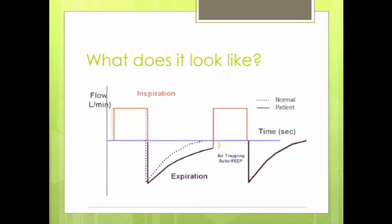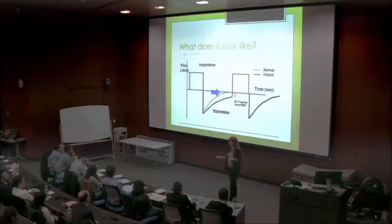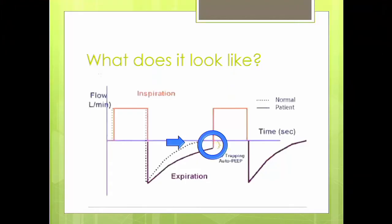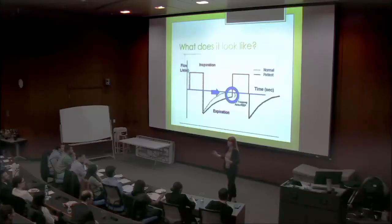Because it can be so serious, I want you to be able to recognize this. This is a cartoon depiction of a flow versus time curve. The dotted line is a regular person — every time we breathe in and breathe out, we get all our air out and get back to zero. But this patient with asthma who has air trapping or auto-PEEP is never able to breathe out completely. They never get back to baseline, so every time the vent gives them a new breath, it's just worsening their problem.